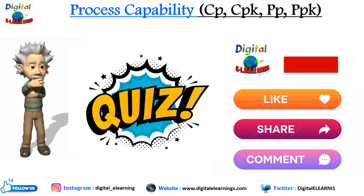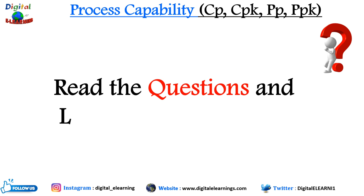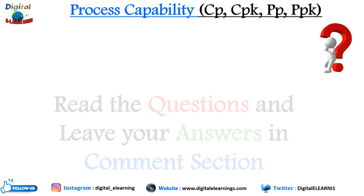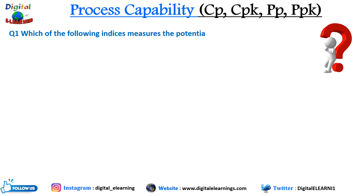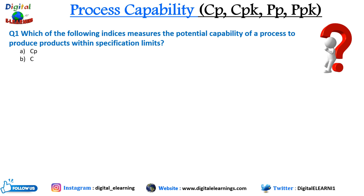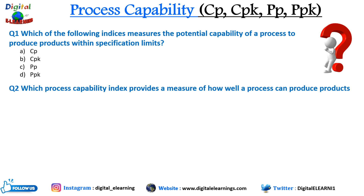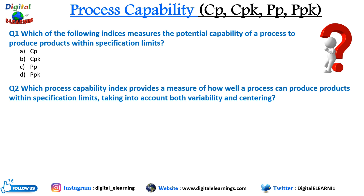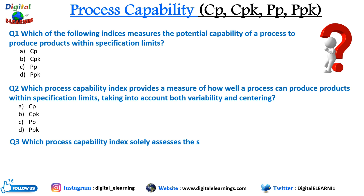Read the questions and leave your answers in the comment section below. Question 1: Which of the following indices measures the potential capability of a process to produce a product within the specification limits — cp, cpk, pp, or ppk? Question 2: Which process capability index provides a measure of how well the process can produce within the specification limits, taking into account both variability and centering — cp, cpk, pp, or ppk? Question 3: Which process capability index solely assesses the spread of the process output — cp, cpk, pp, or ppk?